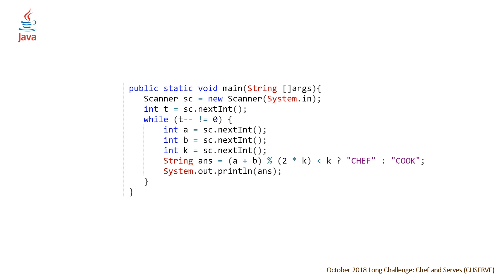Now the Java solution — a little more verbose due to the way we have to read things in, but very similar with just different syntax. We use the Scanner to read in T as well as A, B, and K. We set a string equal to our answer — Chef or Cook — and pass that to a println to output the answer for each test case. The formula here is identical to the one in the C++ solution.